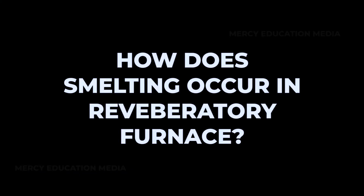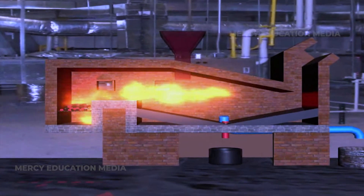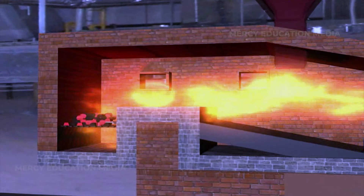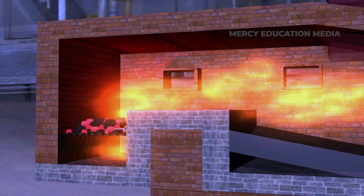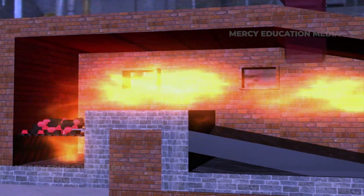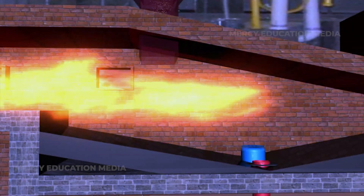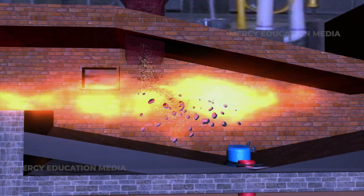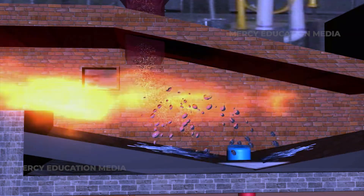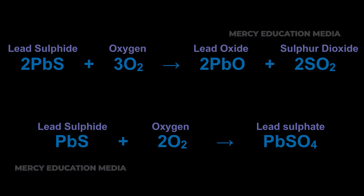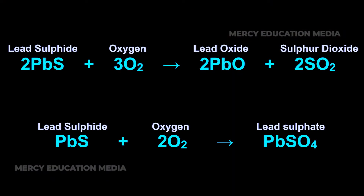How does smelting occur in a reverberatory furnace? The concentrated ore is roasted in a reverberatory furnace at a moderate temperature. The temperature of the furnace is controlled by regulating the air supply. During roasting, galena is partly oxidized to lead monoxide and partly to lead sulfate. PbS + O₂ gives PbO + SO₂.